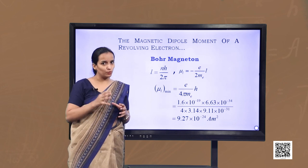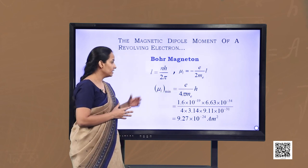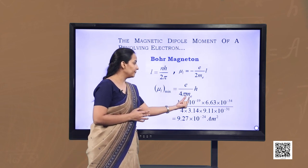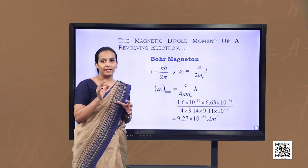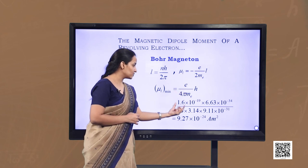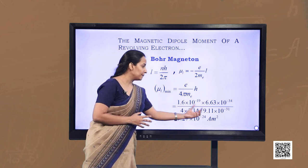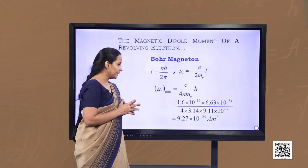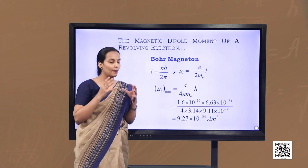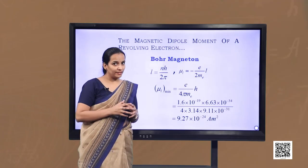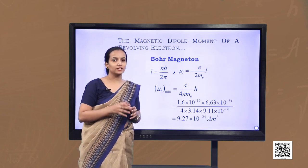To calculate the elementary dipole moment, we substitute the expression for L into the magnetic moment formula for a revolving electron, obtaining μl = e·h / (4π·mₑ) for n = 1 (this is μl minimum). Substituting e = 1.6×10⁻¹⁹ C, h = 6.63×10⁻³⁴ J·s, and mₑ = 9.11×10⁻³¹ kg, we get μl_min = 9.27×10⁻²⁴ A·m². This value is called the Bohr magneton, showing that any charge in uniform circular motion has an associated magnetic moment, called the orbital magnetic moment.